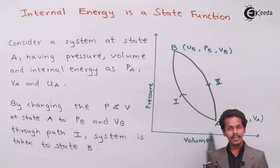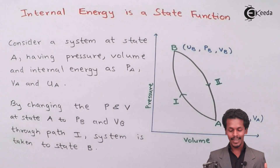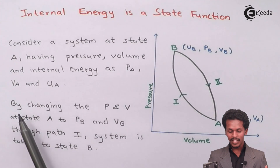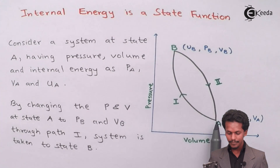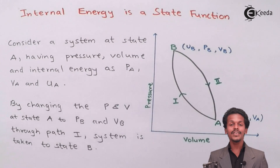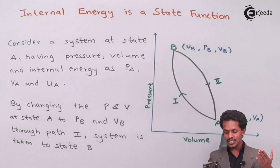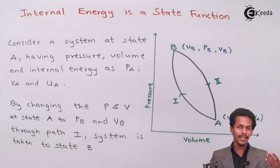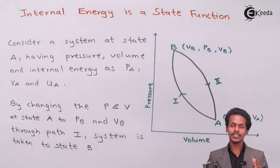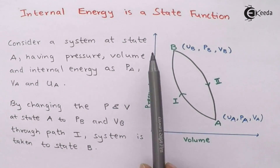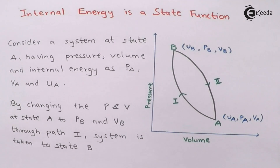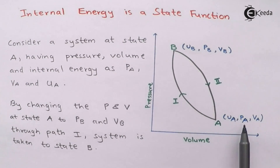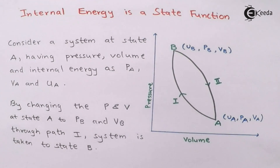By changing the pressure and volume, we can move from State A with pressure P_A and volume V_A to State B with pressure P_B and volume V_B. This P-V graph represents both pressure and volume, and we are now performing this change from (P_A, V_A) to (P_B, V_B).